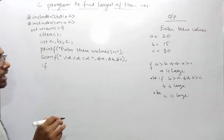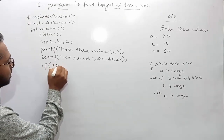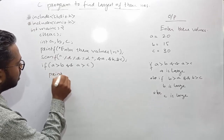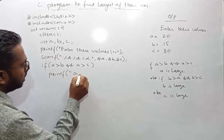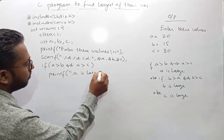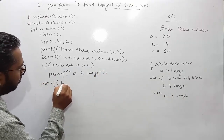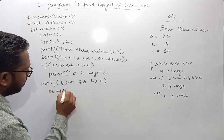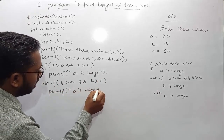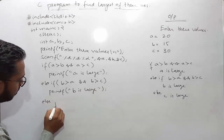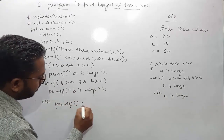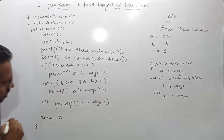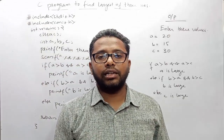Now I use the if-else-if branching statement: if a is greater than b AND a is greater than c, then printf 'a is large'. Else if b is greater than a AND b is greater than c, then printf 'b is large'. Otherwise, in the else block, printf 'c is large'. Then return 0 and close the bracket.